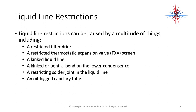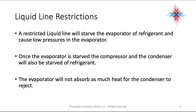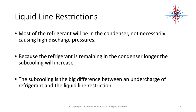An oil-logged capillary tube is one you'll have to look for after ruling everything else out. A restricted liquid line will starve the evaporator of refrigerant, causing low pressures in the evaporator. Once the evaporator is starved, the compressor and condenser will also be starved. Most of the refrigerant will be in the condenser — not necessarily causing high discharge pressures though, because most condensers are sized to hold 100% of the system charge. Because the refrigerant stays in the condenser longer, sub-cooling will increase.